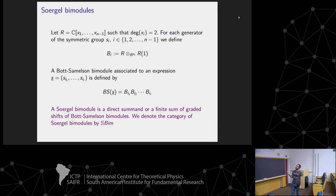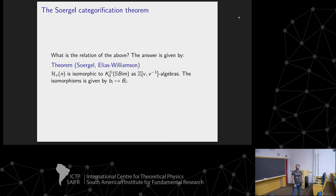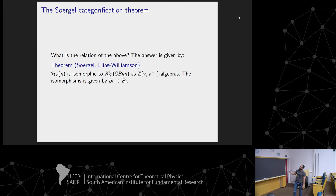The connection to Hecke algebras and symmetric groups is given by the categorification theorem of Soergel and Elias-Williamson: the Hecke algebra is isomorphic to the split Grothendieck group of the category of Soergel bimodules. The relation as a map sends the Kazhdan-Lusztig basis elements to the indecomposable objects of the category of Soergel bimodules. When v is set to 1, one recovers the symmetric group.